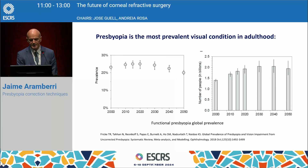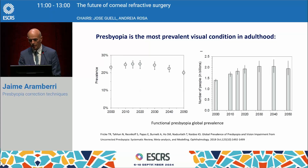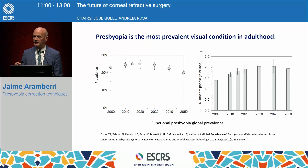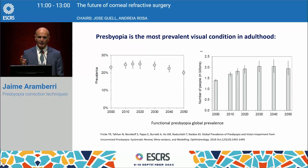Presbyopia is the most prevalent visual condition in adulthood. You can see in these two graphs what the estimation is for the progression of presbyopia in the next years, and it will go increasing up to 2030.